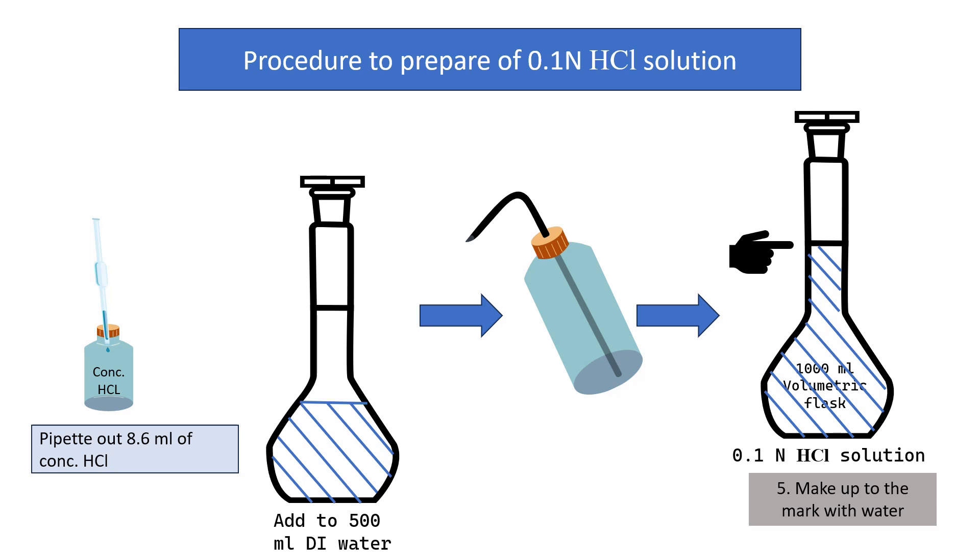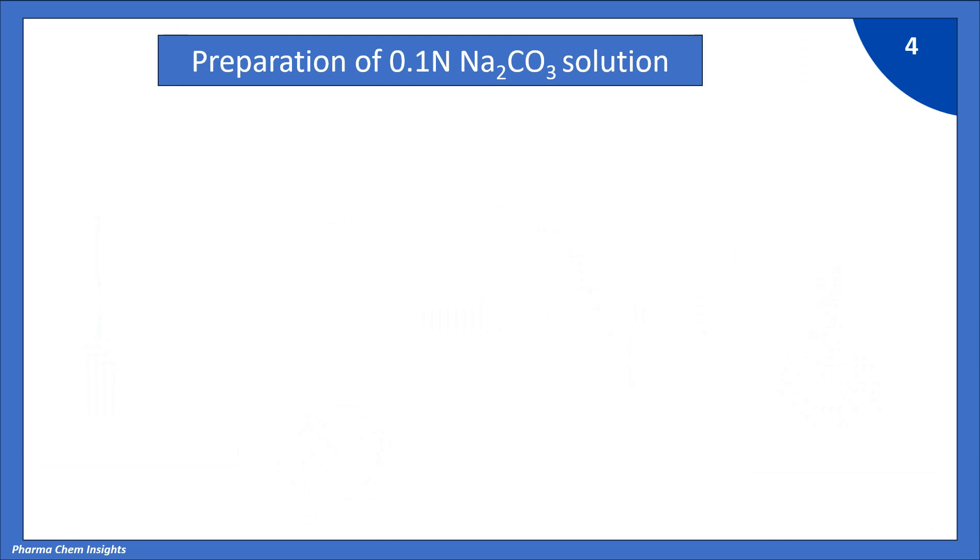Now that we have our 0.1 normal HCl solution, the next step is to standardize it. Standardization ensures that the solution concentration is accurate, which is crucial for experiments and reactions. We will standardize using a primary standard like sodium carbonate. Let's see the preparation of 0.1 normal sodium carbonate solution.